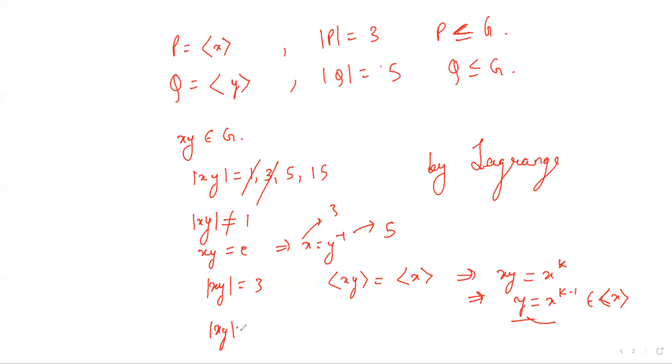if the order of xy equals 5, the group generated by xy will be the same as the group generated by y since there is a unique Sylow 5-subgroup. So xy equals some y to the power k, which implies x equals y to the power k minus 1,